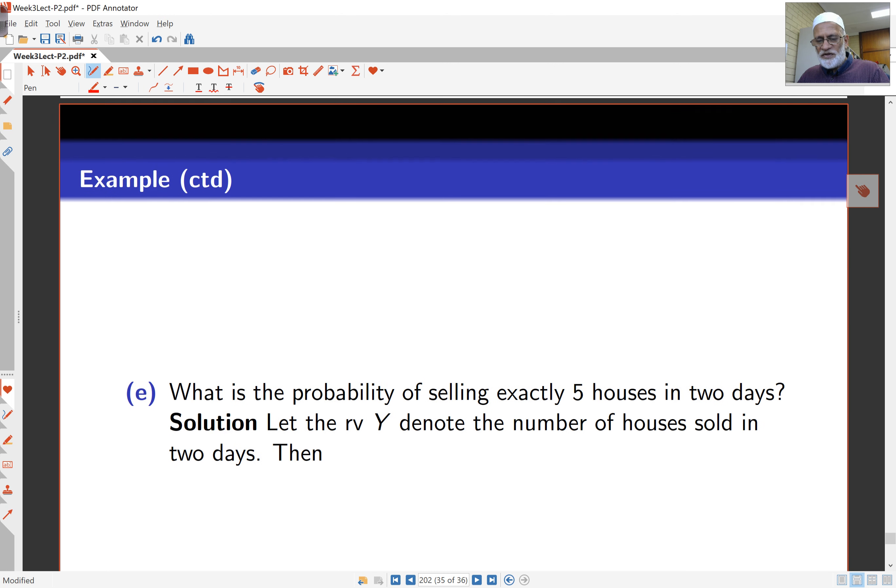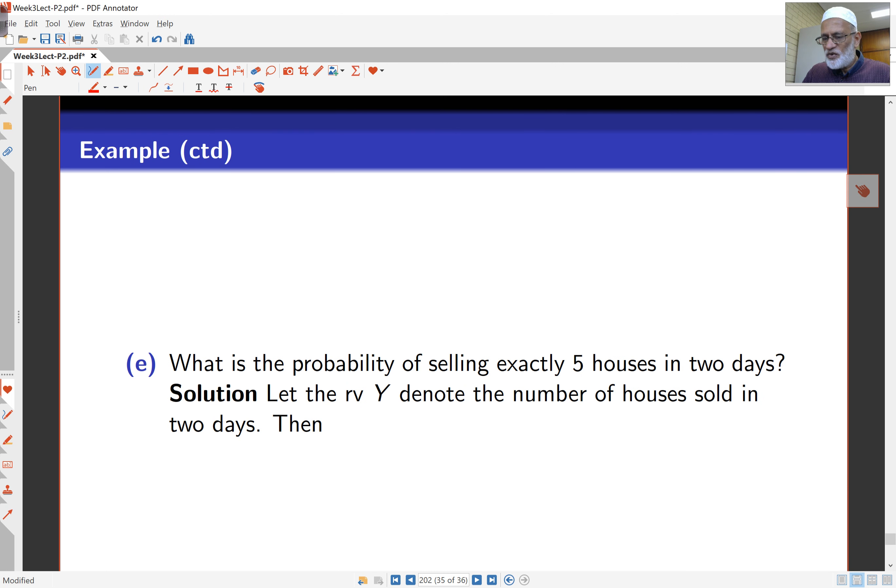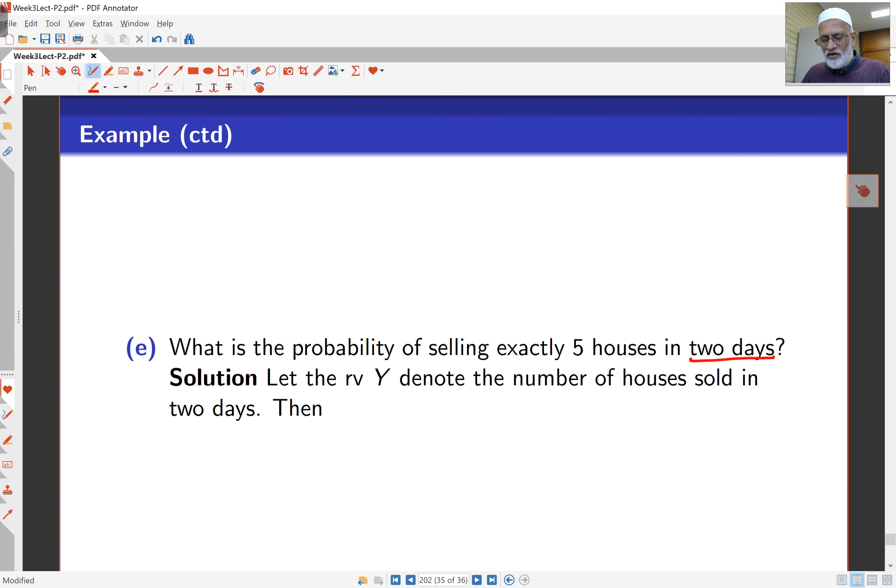Now, probability of selling exactly 5 houses in 2 days. So now my volume has changed from 1 to 2 days. So if I let now random variable Y be the number of houses sold in 2 days, then Y is still Poisson. But because my volume has doubled, my mean also doubles to 3. So I scale the mean by the amount I scale the volume by. I go from 1 day to 2 days. So my mean scales from 1.5 to 1.5 times 2.